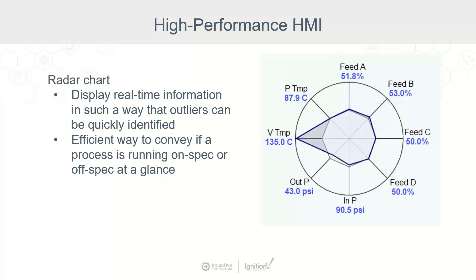A radar chart is a great way to display real-time information to quickly identify outliers and convey if a process is running on spec or off spec at a glance, especially with many process values. Rather than putting a bunch of process values on the screen, we can leverage them in a radar chart as individual spokes. We can clearly see at a glance if anything is outlying — for example, you can see that V temperature is outlying. We tune it so the midpoint of every analog value represents the desired setpoint, and if it deviates, it's very easy to see.